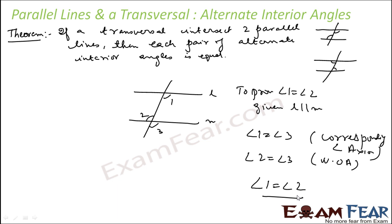We can easily prove it — nothing big deal about it. Since we have proved it, it is a theorem. Let's write the converse of this. The theorem says if the transversal intersects two parallel lines, then alternate angles are equal. So the converse will be: if the alternate angles are equal, then the lines are parallel.